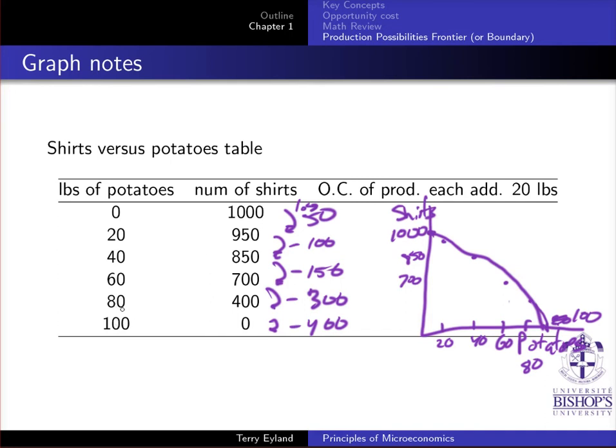However, when you get towards the end, and you want to go from 80 pounds of potatoes to 100 shirts, well, then in that situation, you're going to have to take a lot of workers away, because now they might have to handpick the potatoes, because we're not in the situation where the machinery is readily available anymore. So we're going to have to take away a lot of workers. And these workers could have produced a lot of shirts.